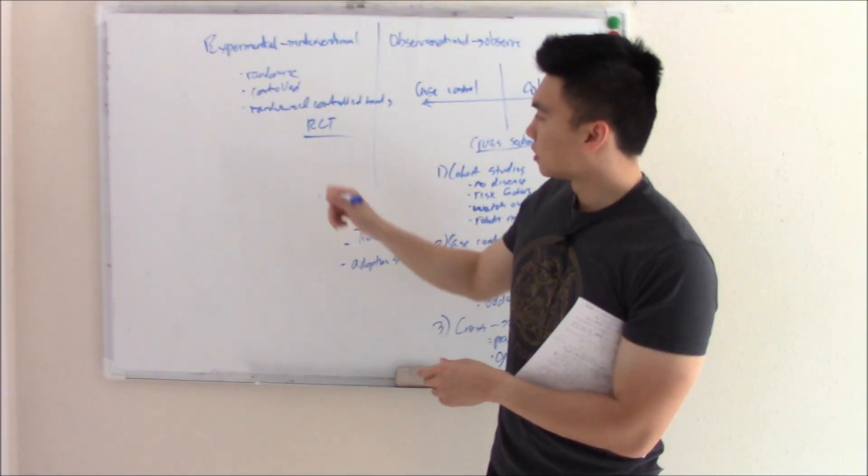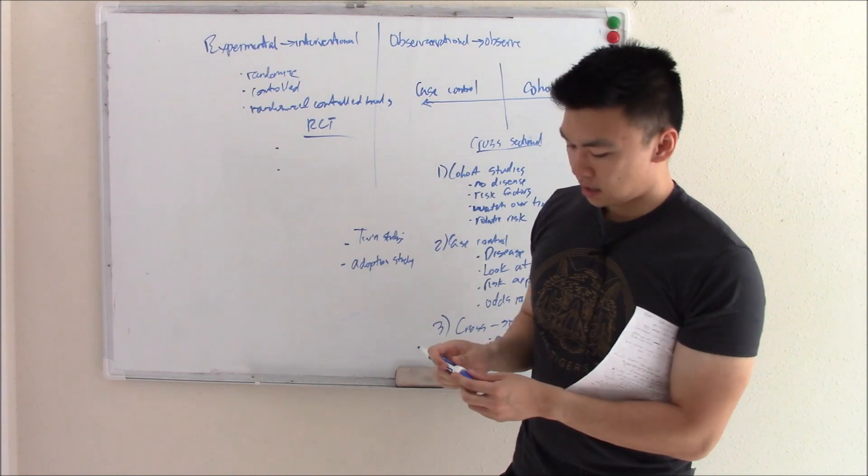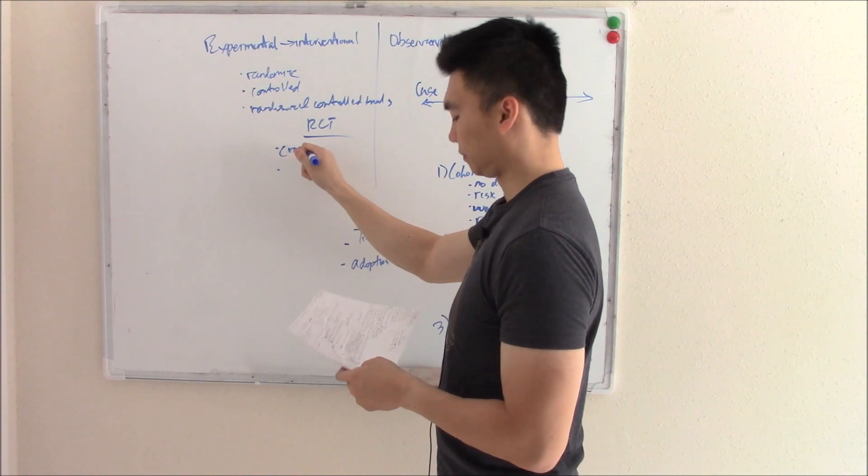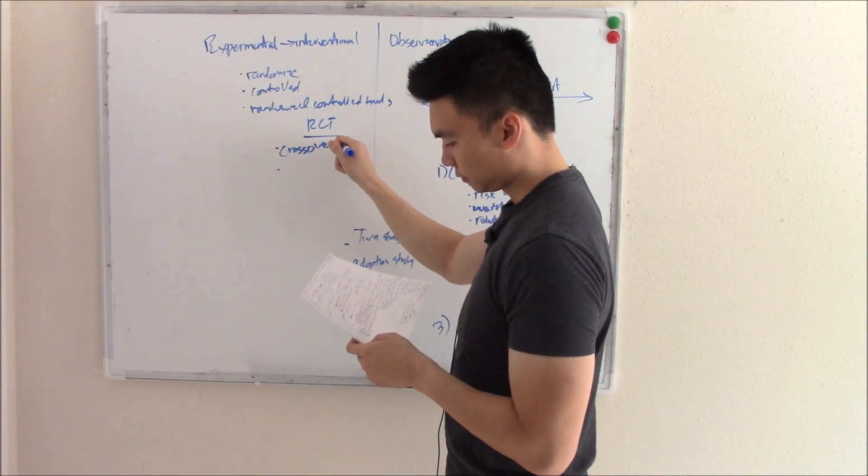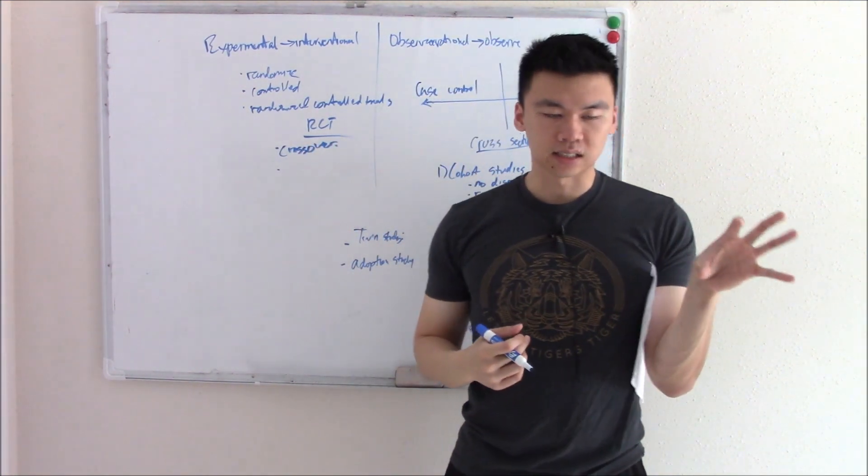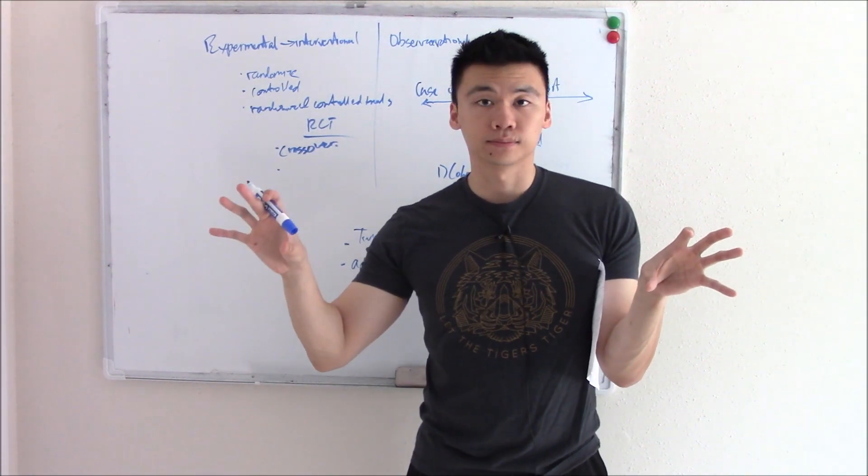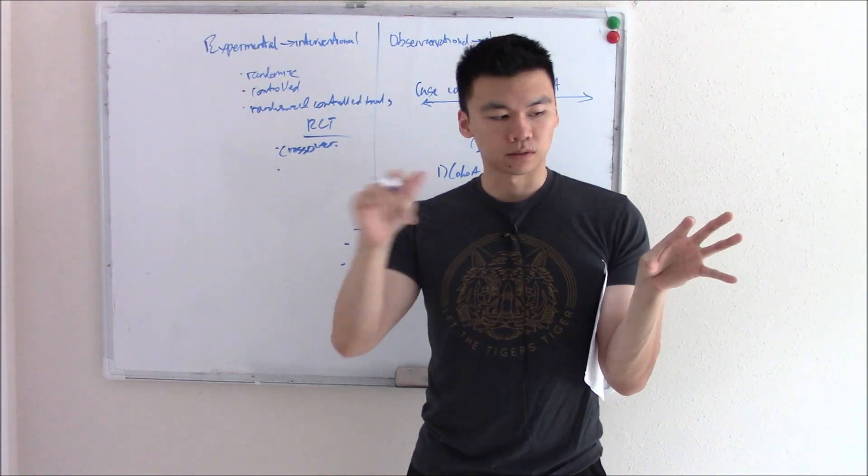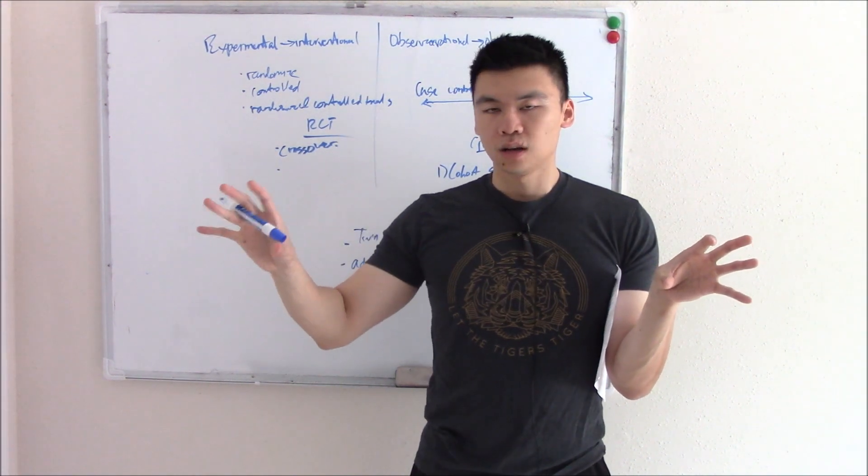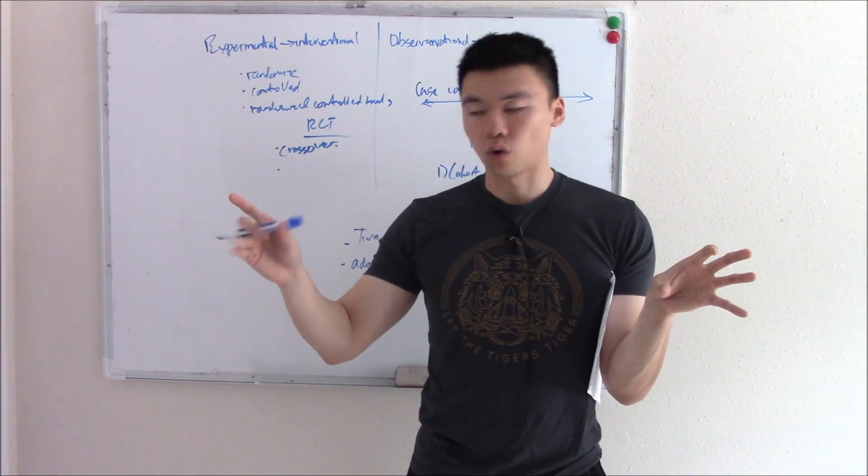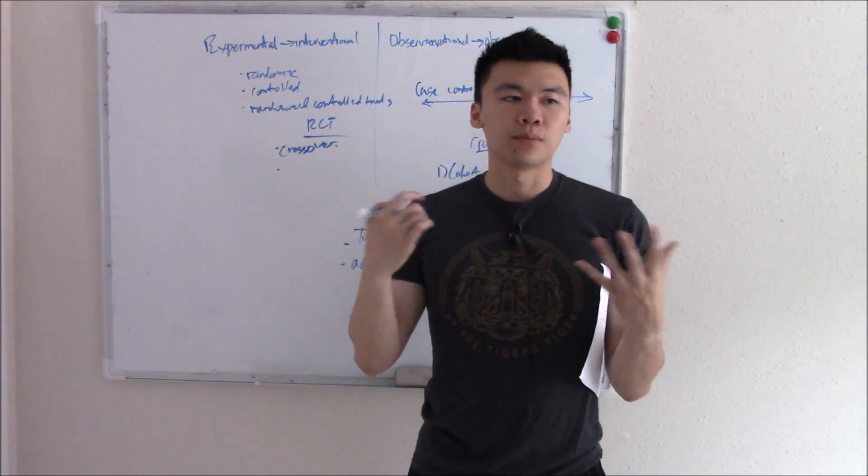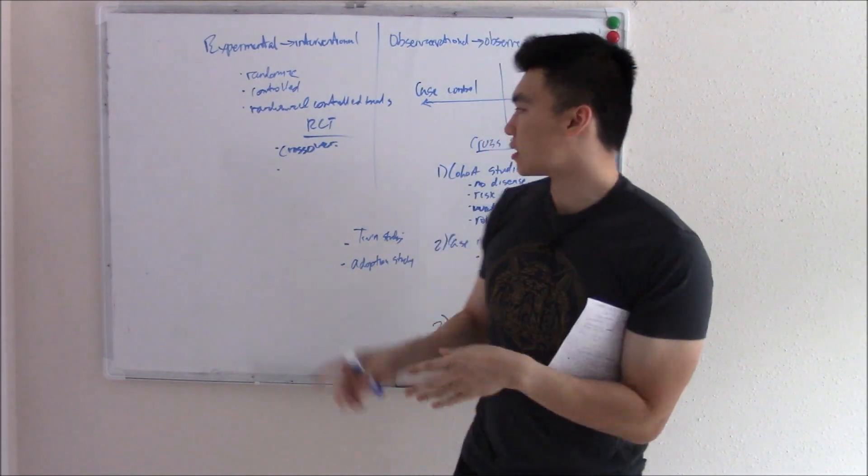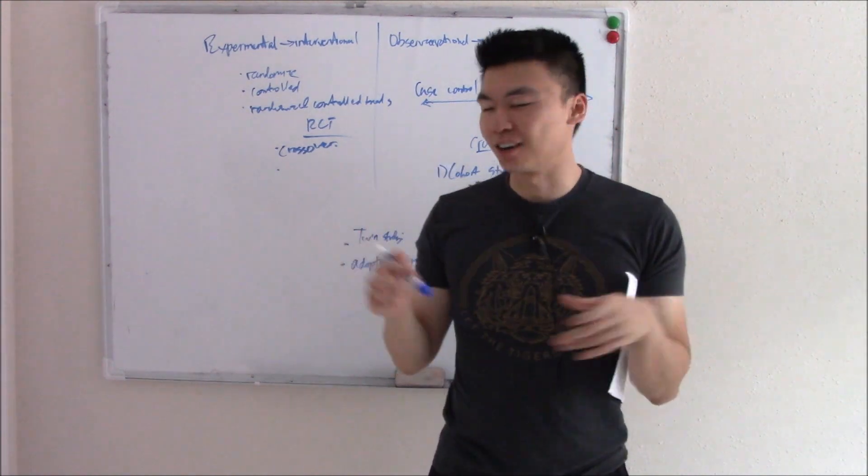There are kind of subcategories of experimental studies. There's something called a crossover study. So we talked about one group that gets experimented on compared to one group that doesn't, the control group. In crossover studies, members of the group from the experimental study will cross over and now be in the control group or vice versa. And by kind of jumping ship, you get a better idea of whether the drug is effective, whether it's placebo, all this is great information. That is a crossover study. The name kind of gives it away.